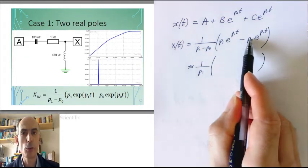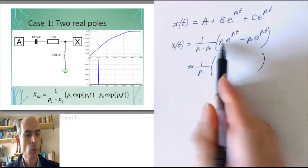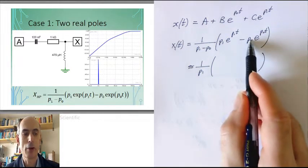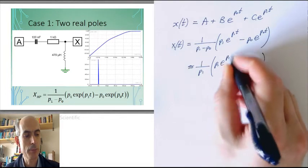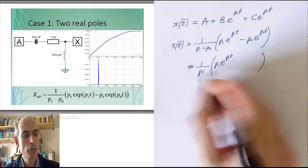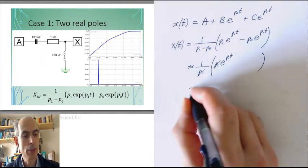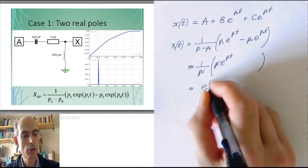Inside the bracket here, if P0 is so much smaller than P1, we can neglect this whole term. It's never going to have a very large value, and that will just give us this. The two factors of P1 cancel out. It's approximately e to the P1t.